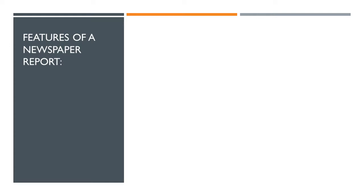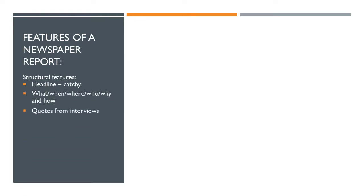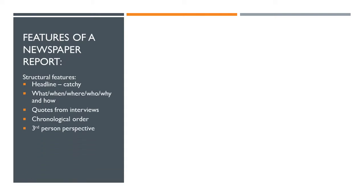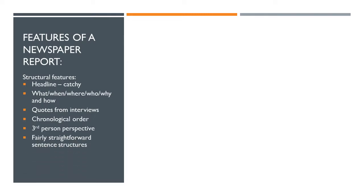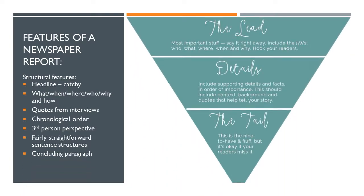So, features of a newspaper report — structural features. You should have a catchy headline; answer the questions what, when, where, who, why and how; use quotes from interviews; talk about the incident in chronological order, so in time order; use a third person perspective, so not 'I'; and have fairly straightforward sentence structures; and a concluding paragraph.